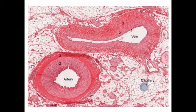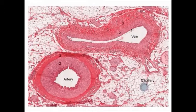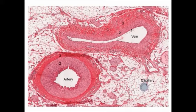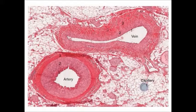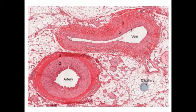Layer one is called the tunica interna, comprising squamous epithelial cells which present a smooth surface for blood flow. Layer two, the tunica media, means middle layer — it contains elastic tissue, some muscle, and strengthening collagen. The elastic tissue helps arteries, especially those close to the heart, to absorb the pulses of high pressure blood coming out from the heart every time it beats.